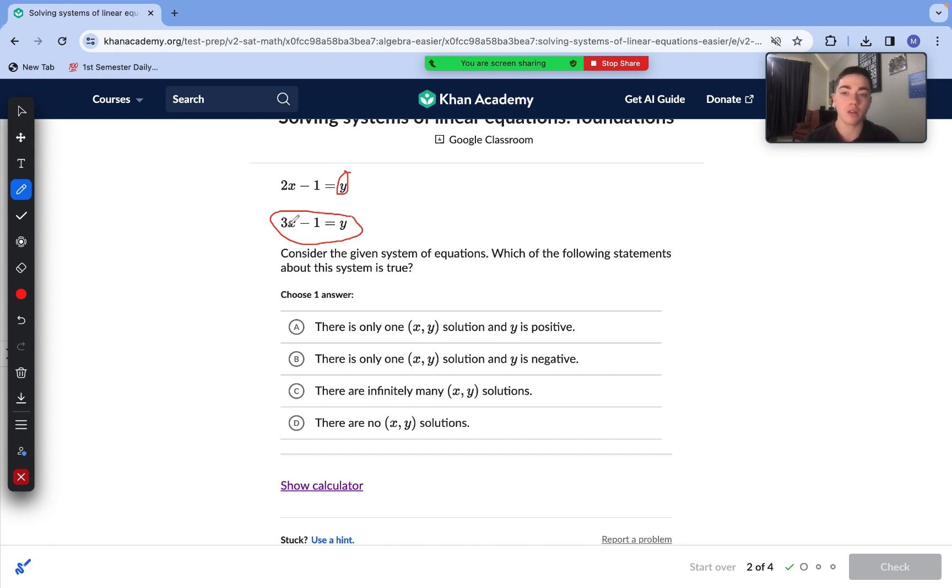We can see that y is defined in this equation as 3x minus 1. So all we need to do is substitute in 3x minus 1 for y in this first equation to get 2x minus 1 equals 3x minus 1. This is what is meant by when you say set the equations equal to each other. Now all we have to do is solve. We add one to each side. Cancels out both of our constants. Then we can subtract 2x from each side. We are left with 0 equals x.